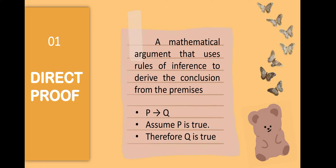Let's start with the first one, which is called the direct proof. By definition, a direct proof is a mathematical argument that uses rules of inference to derive the conclusion from the premises. If you see the symbols P arrow Q, that is read as: if P, then Q. For direct proof, we assume that P is true, and by that we can make a conclusion that Q is also true.